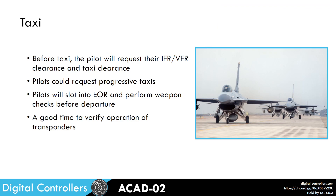Moving on to the taxi phase. Before taxi, the pilot typically requests their IFR or VFR flight clearance and then their taxi clearance. Pilots could also request progressive taxis at this point, which is slightly more workload intensive for the controller. Pilots will typically slot into an end of runway position, or EOR, and perform their weapon checks there before departure. The taxi phase can also be a good time to verify the operation of the aircraft's transponders, if not done already during startup.